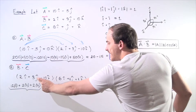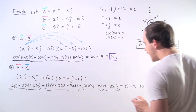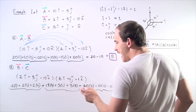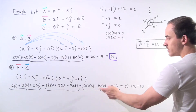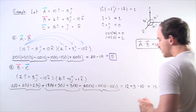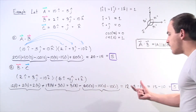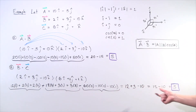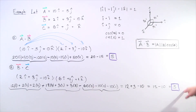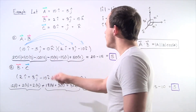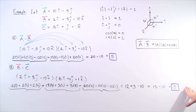Finally, the last term: negative 10 K hat times 6 I hat gives 60 times 0. Negative 10 K hat and 1 J hat gives 10 times 0. And negative 10 K hat multiplied by positive 1 K hat gives negative 10. Summing everything up, we get 12 plus 3 minus 10, which gives us 15 minus 10, equaling 5. So once again, the same exact value as before. The dot product of A and B and the dot product of B and C both give the same scalar value of 5.